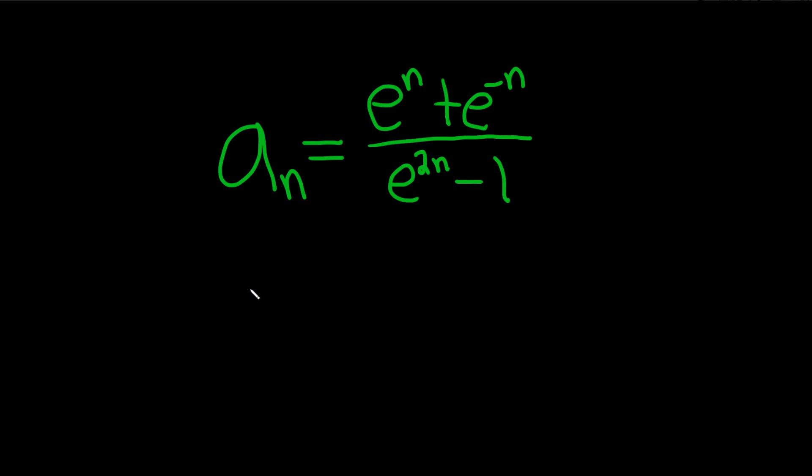Determine whether the sequence converges or diverges. So basically we just have to take the limit as n approaches infinity of the sequence. So we have e to the n plus e to the negative n over e to the 2n minus 1.